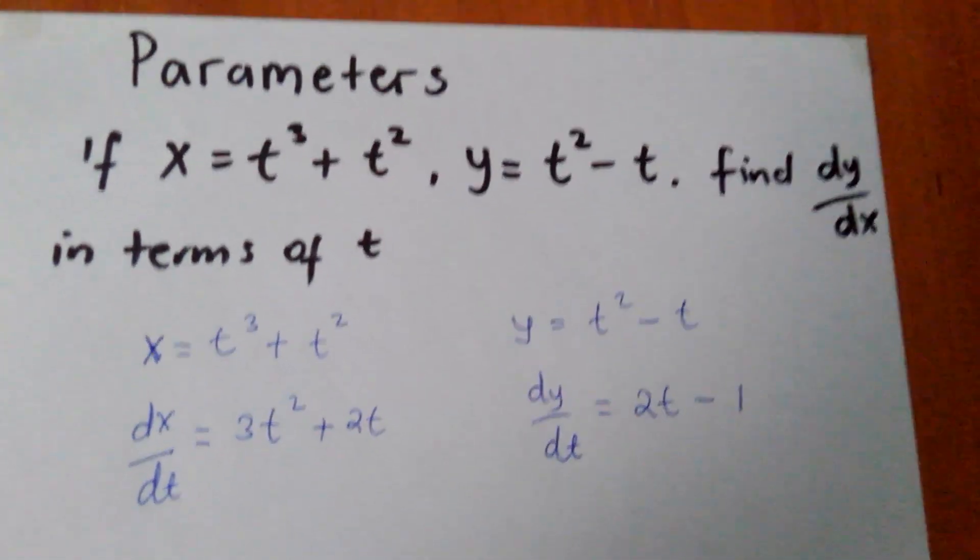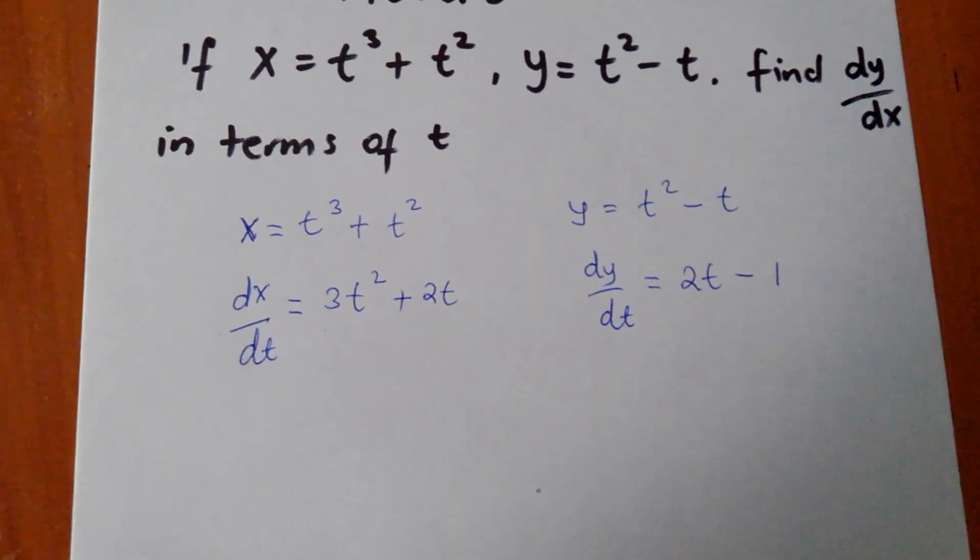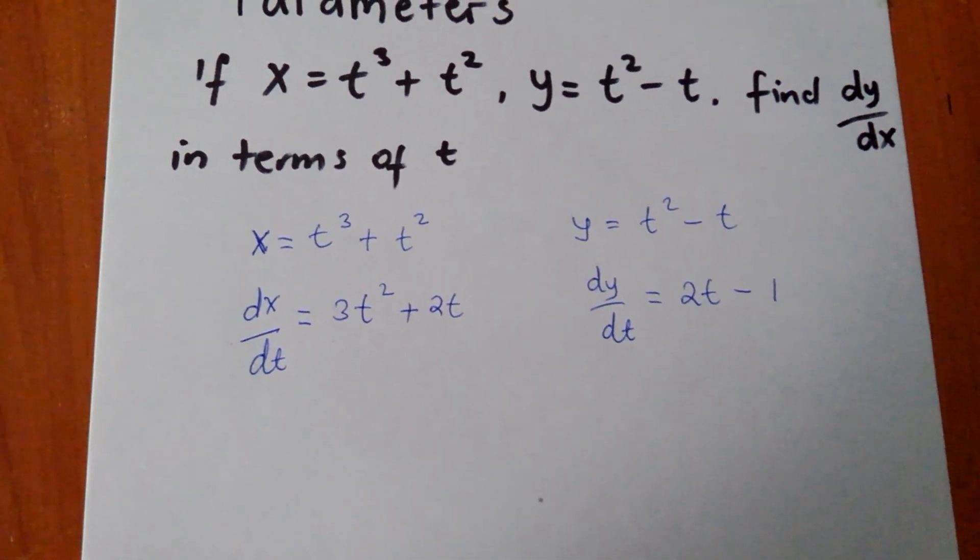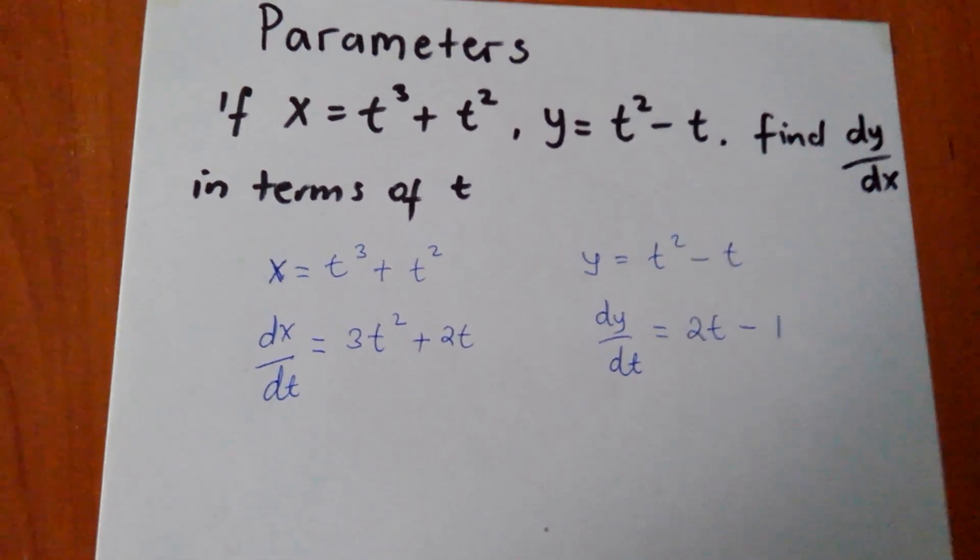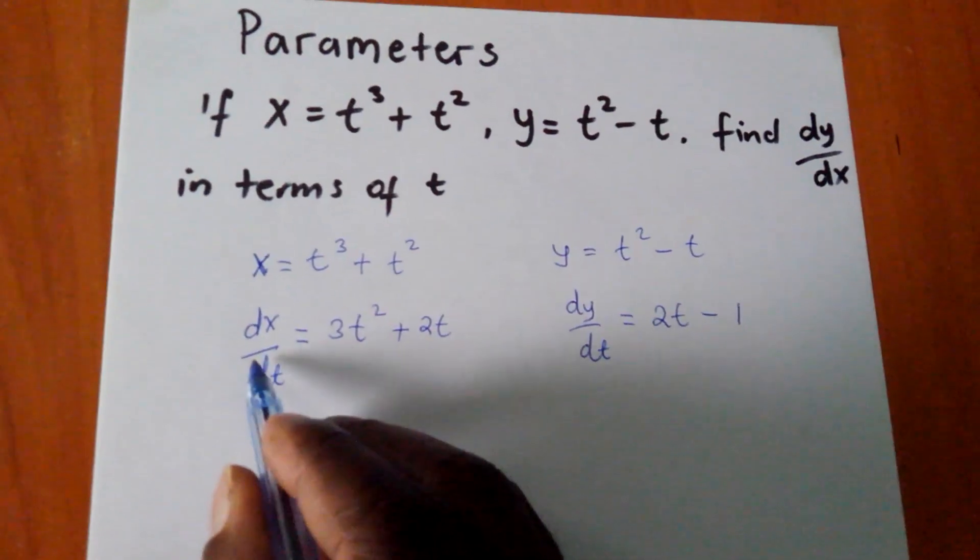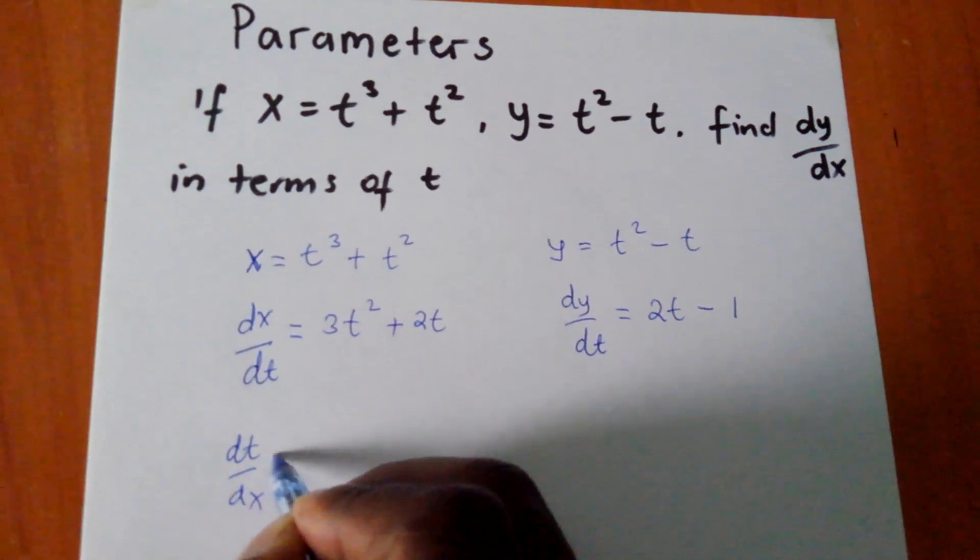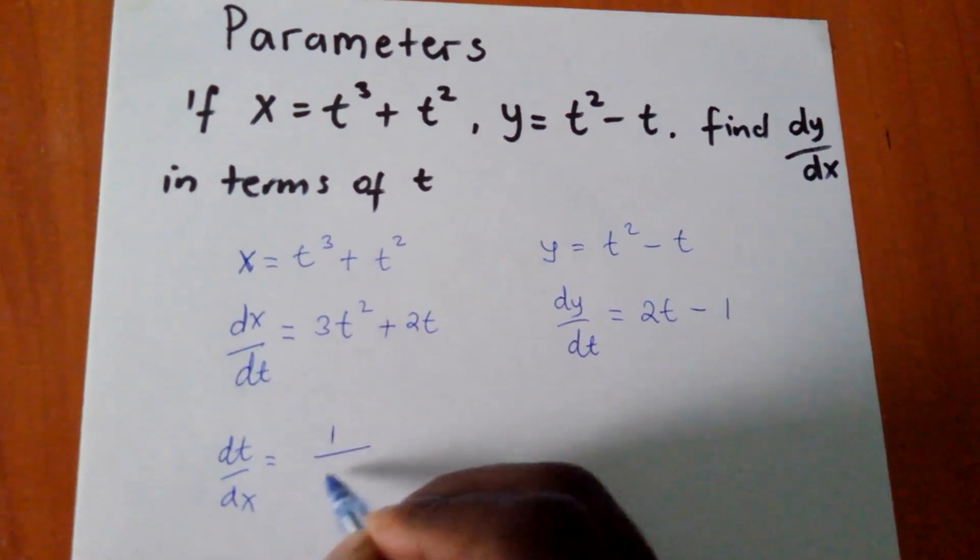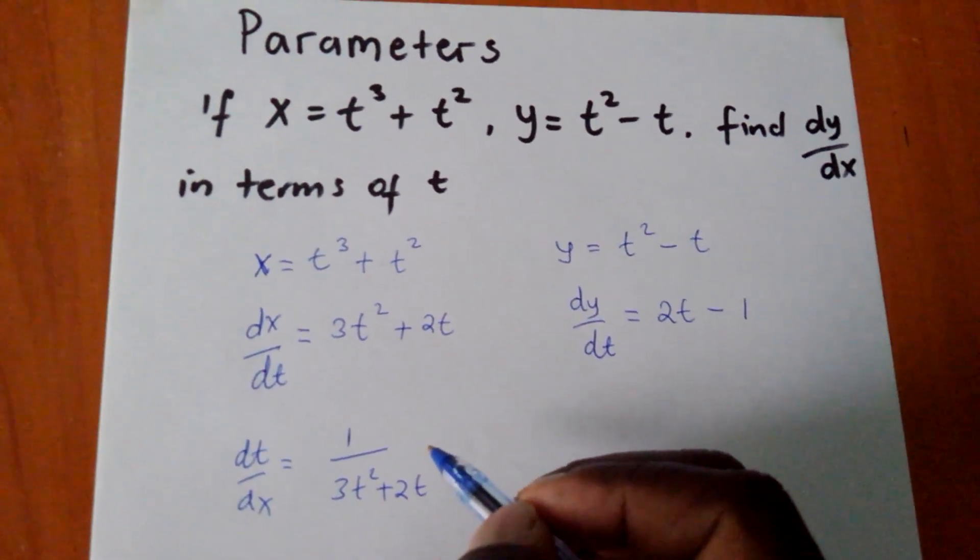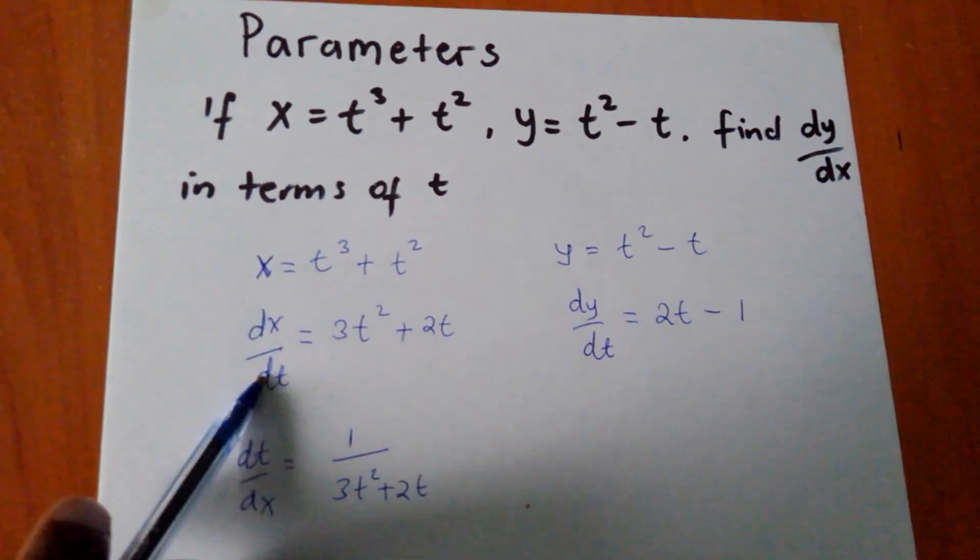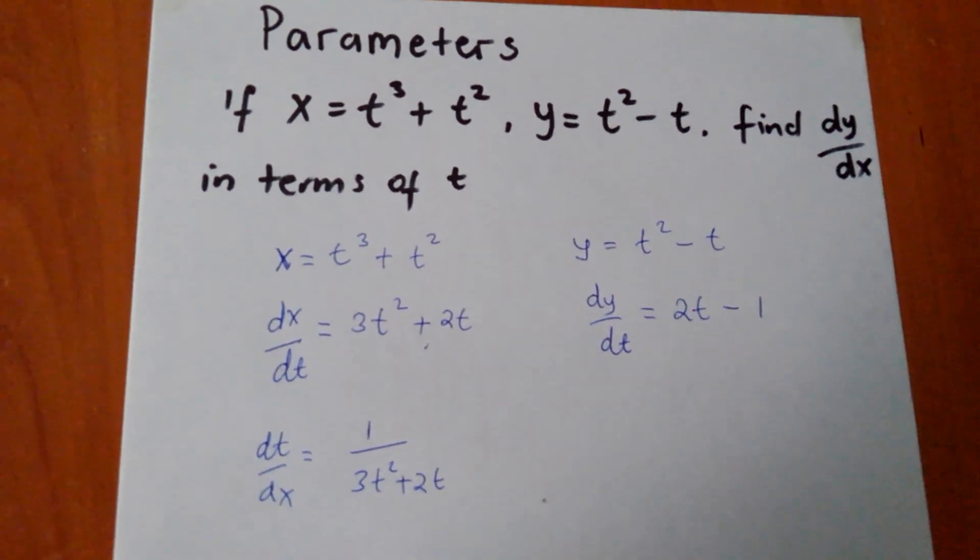I hope we can agree up to that level. No one is lost, so that we can proceed. But another thing which I want to show you before, that still my dt/dx will equal to 1 over 3t squared plus 2t. If my dx/dt equals to this, then my dt/dx will equal to this.